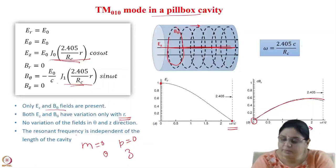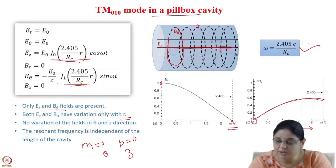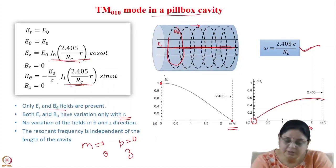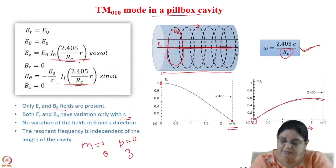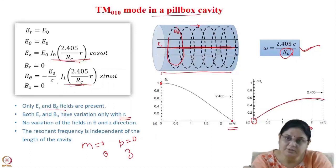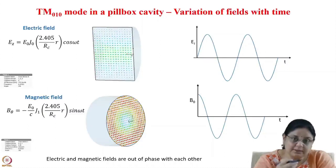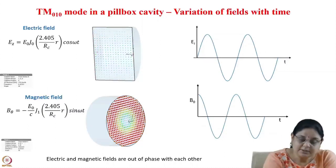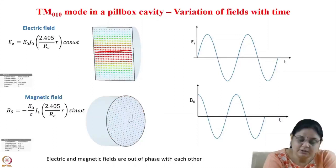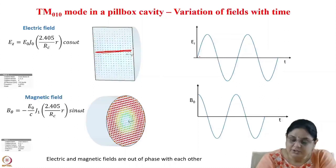The resonant frequency can be calculated by substituting the values of M, N, and P into the resonant frequency formula. You see that the resonant frequency is independent of the length of the cavity — it depends only upon the radius of the cavity and is inversely proportional to it. The higher the radius, the smaller is the frequency. This is a standing wave, so the pattern is constant along various directions but there is time variation.